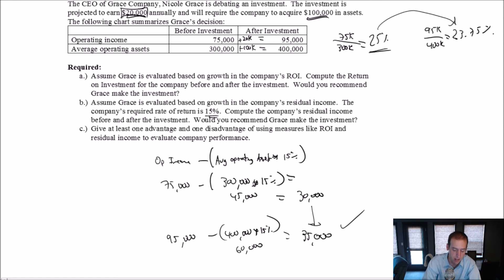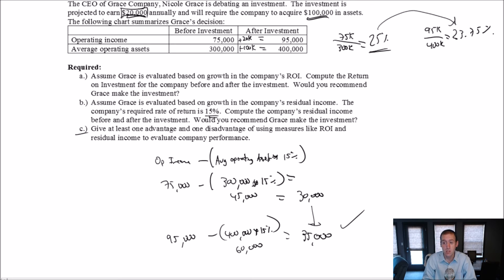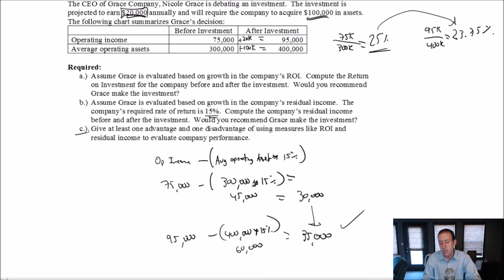The issue with ROI is that we may pass up really good investments — ones that our company would want us to make — just to keep that percentage up. Residual income gets us past that, making it a better summary measure than ROI because it doesn't have that weird issue. As for advantages of summary measures like ROI and residual income: they're cheap, quick, and easy, and they do a pretty good job measuring performance. They summarize how a company has performed in one simple measure. The disadvantage is that sometimes they can cause people to behave in a way that's not congruent with what the company should want.